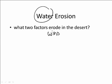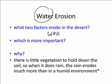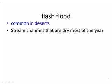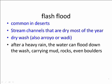Which is more important? Water. Although water is rare, it does more erosion because there's very little vegetation in the desert to hold down the soil. So when it does rain, the rain erodes much more than in a humid environment. If rain does occur in the desert, it's common to have flash floods. Stream channels are dry most of the year, but in a flash flood they can be filled very quickly with a wall of water. The dry washes are also called arroyos or wadis. The water can come down very quickly and dangerously, carrying mud or rocks and even boulders. If it is carrying rocks and boulders, it's referred to as a debris flow.